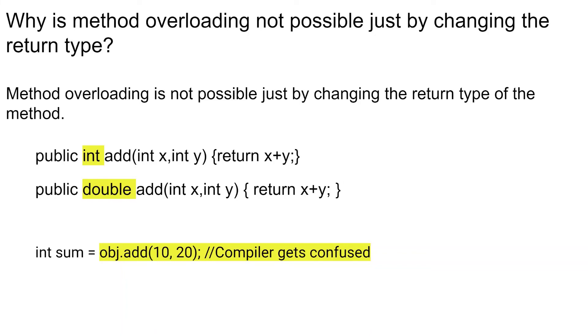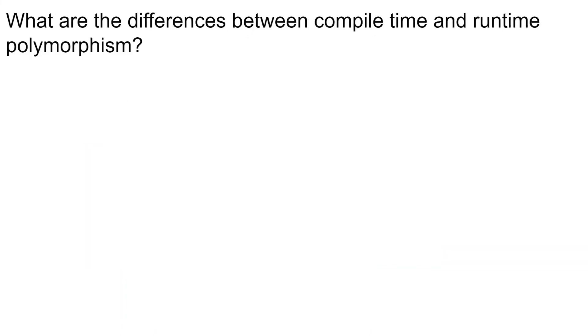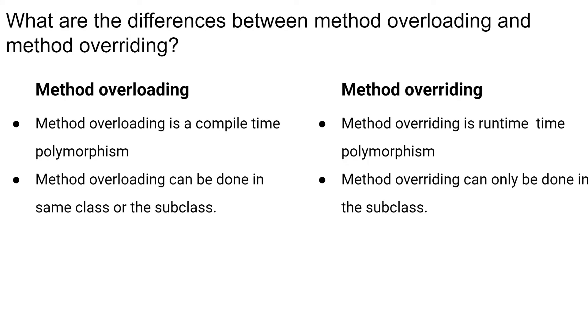Can you tell me some differences between method overloading and method overriding in Java? Okay. There are several differences in method overloading and method overriding. Method overloading is a compile time feature. It is checked by the compiler and method overriding is a runtime feature provided by Java. Method overloading can be done in the same class or can be done in the subclass, but method overriding can only be done in the subclass. So in conclusion, method overloading is a compile time feature that is performed by the compiler and method overriding is a runtime feature that happens during actual runtime of your program.